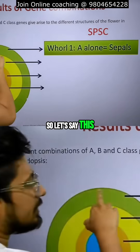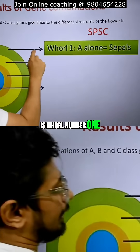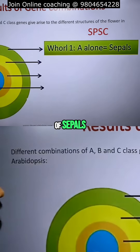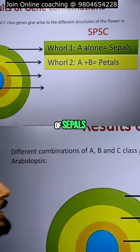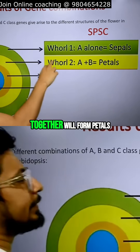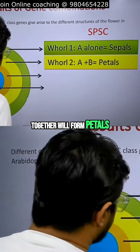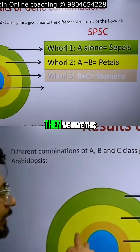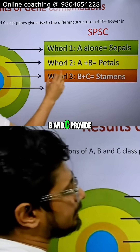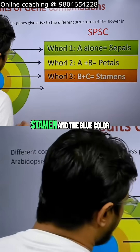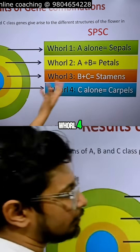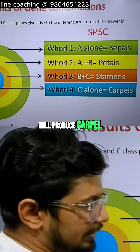In world number 1, A alone gives rise to the formation of sepals. A and B together — that is green and yellow here — will form petals. Then we have the dark yellow color: B and C together provide stamens, and the blue color world 4 will produce carpels.